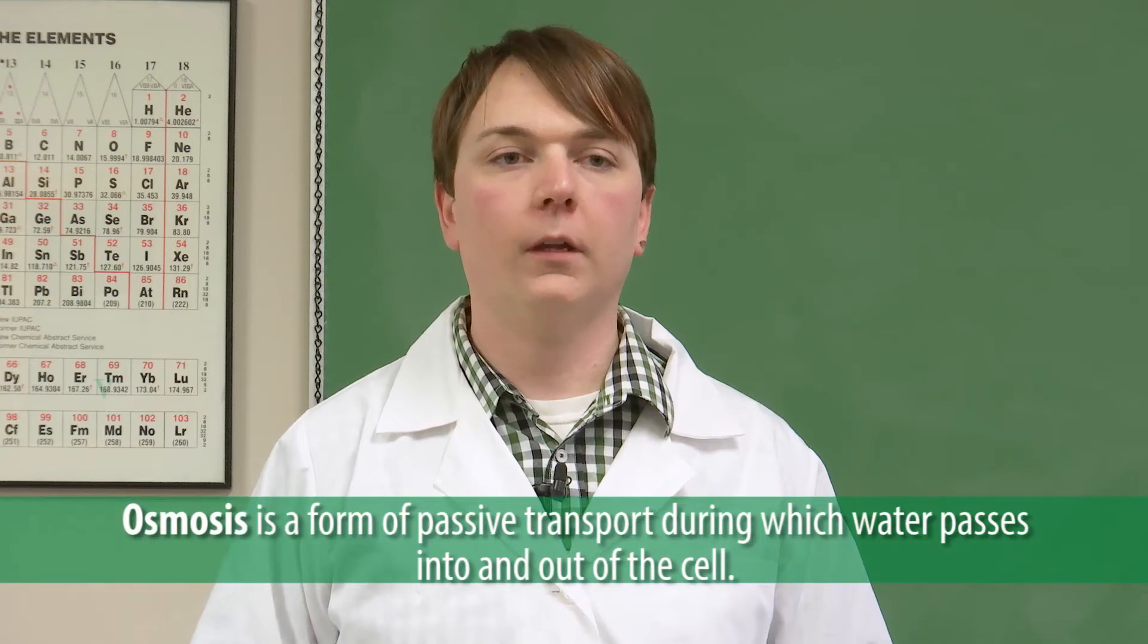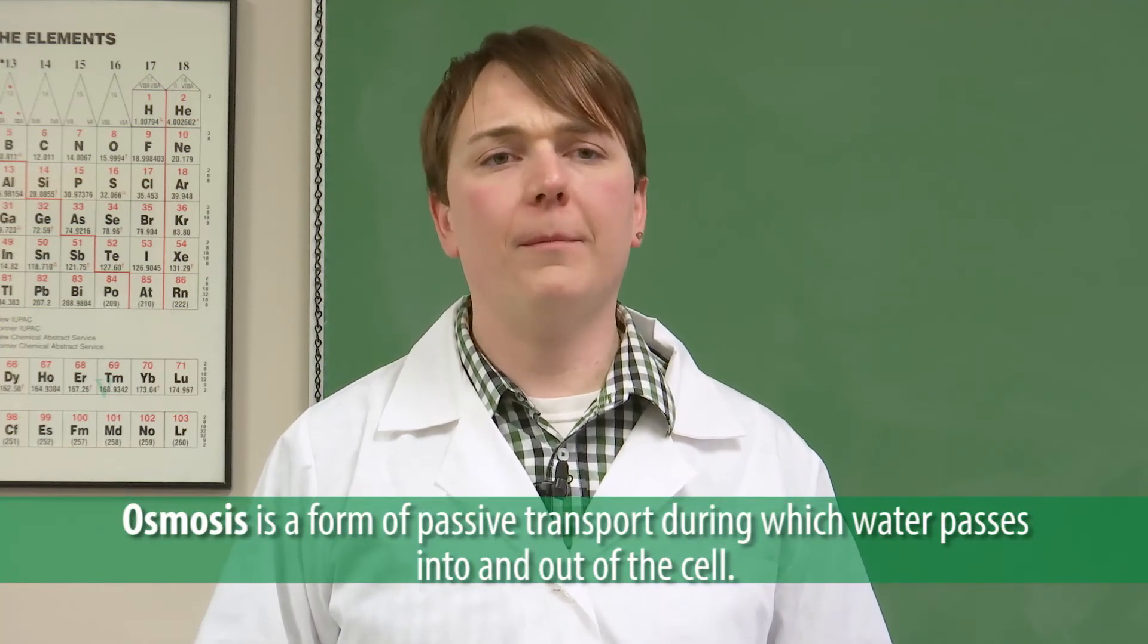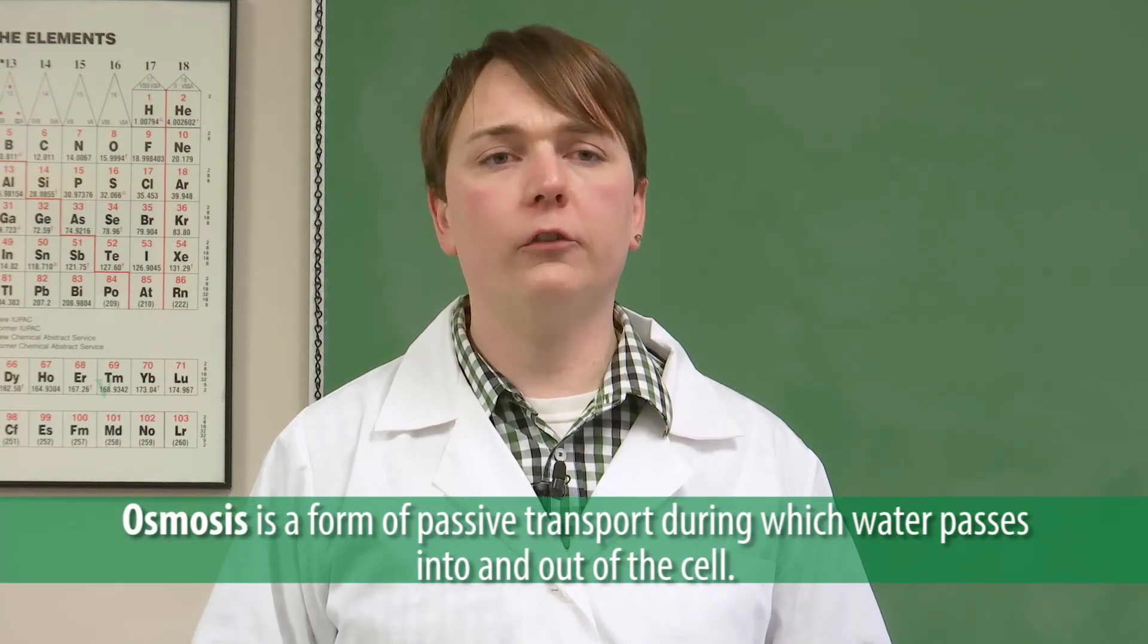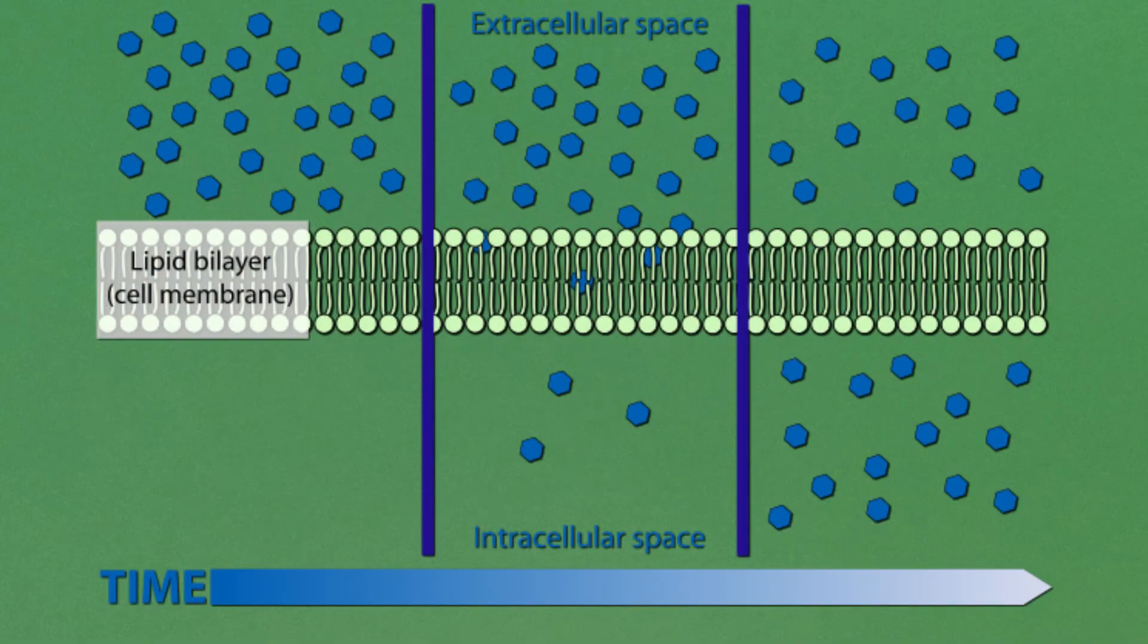Water also travels freely across the cell membrane, but instead of passive transport we call this osmosis. Too much water in a cell can be a bad thing as the membrane can only stretch so much. To prevent this cells pump out ions, atoms with either a positive or negative charge, by using those proteins we mentioned.